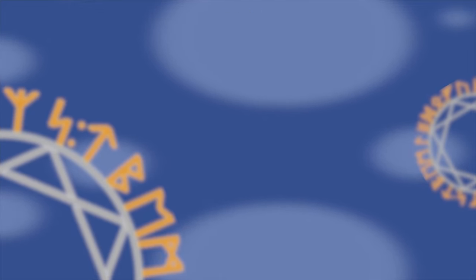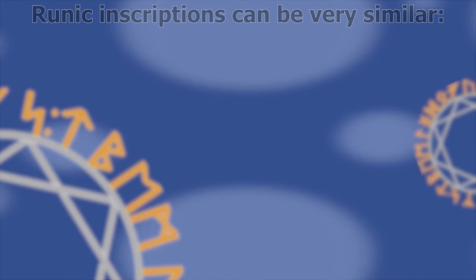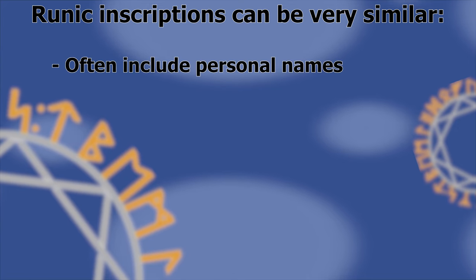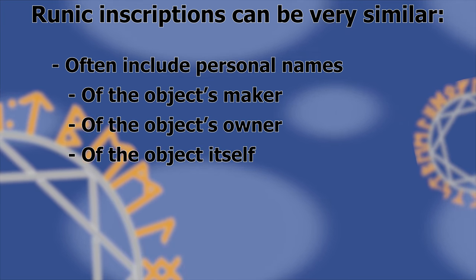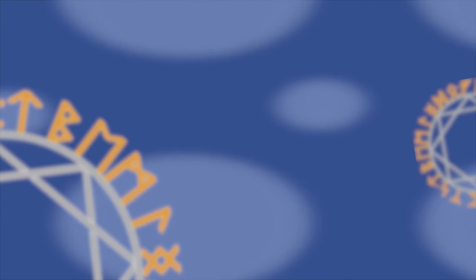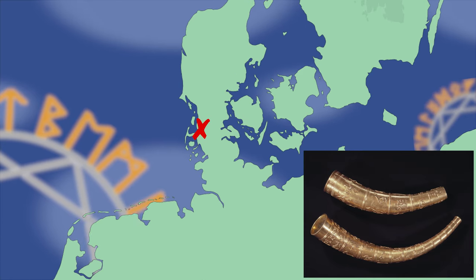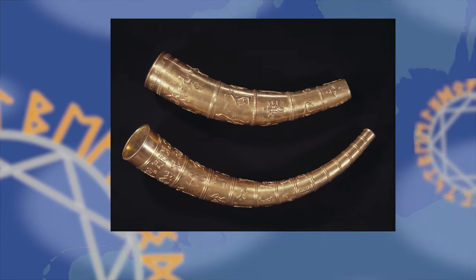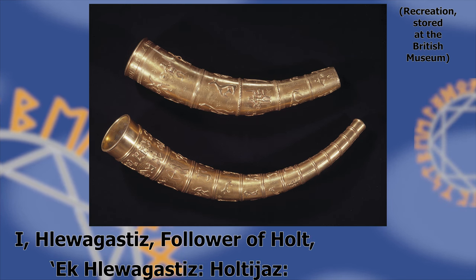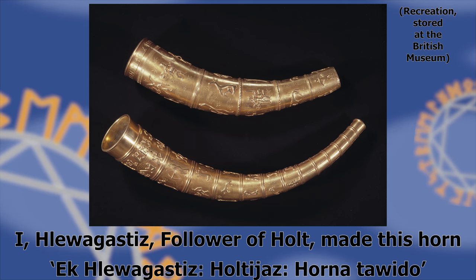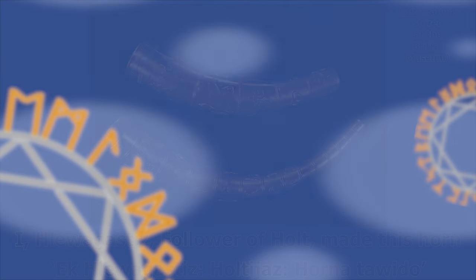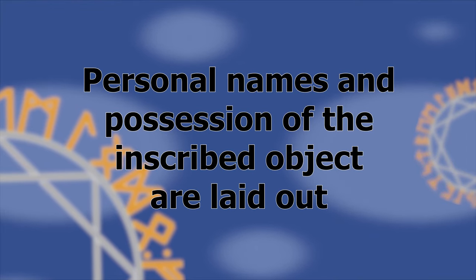When we can interpret Elder Futhark runes, they are also difficult to understand because we have very little working knowledge of Proto-Germanic. But runic inscriptions are very similar in pattern — they usually include personal names, either of an object's maker, its owner, or of the object itself. A good example is found in the longest Elder Futhark inscription we have, inscribed on a golden drinking horn found at Gallehus in Jutland in 1734, reading: 'I, Hlawagastis, follower of Halt, made this horn.' Unfortunately the horn was stolen and melted down in 1802, but it demonstrates a pattern repeated again and again: personal names and possession of inscribed objects are laid out.